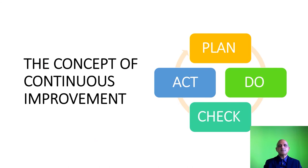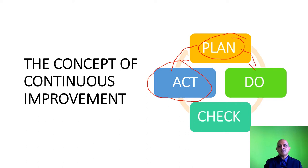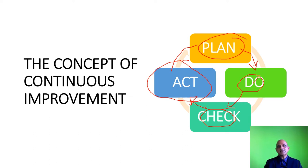This is the principle of continuous quality improvement, which forms the basis of all management systems. You begin with planning, then commence doing or implementing. You move on to checking, and finally you act upon any inconsistencies or limitations in the entire system. This completes the cycle of continuous quality improvement.